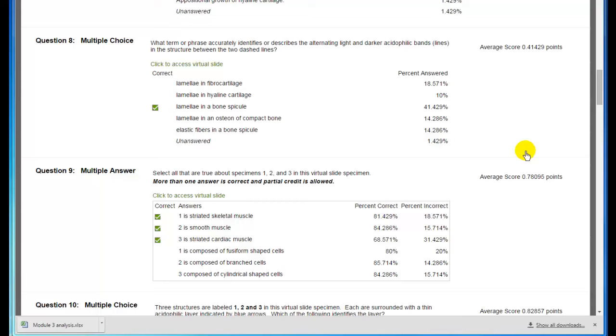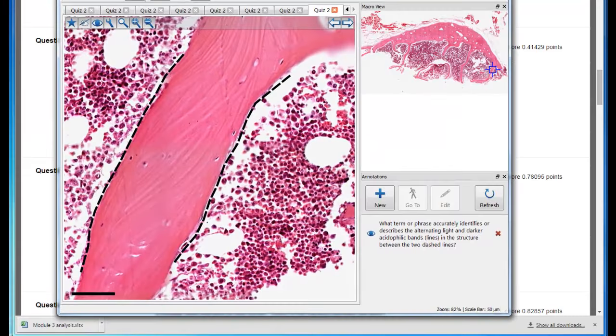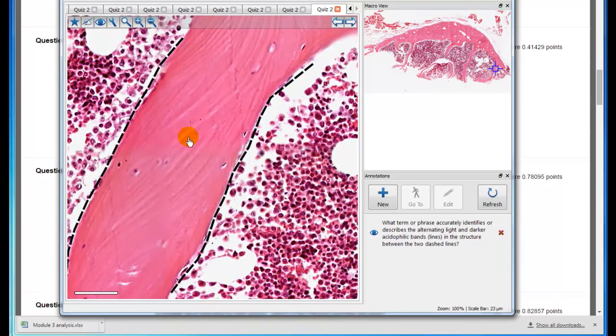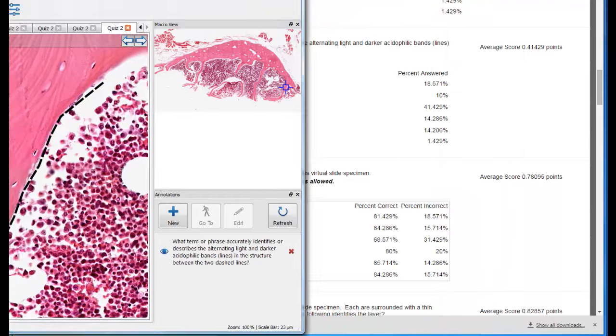The next question: what term or phrase accurately identifies or describes the alternating light and darker acidophilic bands or lines in the structure between the two dashed lines? The correct answer was lamella in a bone spicule, not in fibrocartilage, not in hyaline cartilage, not lamella in osteone, not elastic fibers. Here we are in a bone spicule. You can see these lines. You do not see any osteones. You see lacunae with osteocytes in them, and these lines are lamella in a bone spicule.